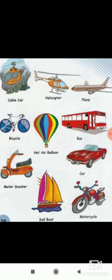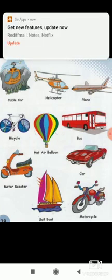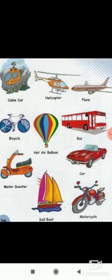Some things move on the road, like bus, car, motor, scooter, etc. These types of transports we call road transports. And some transports we call water transports, like a sailboat, boat, ship, etc.